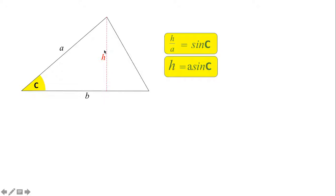Now remember the area of any triangle generally is just a half times the base times the height, so half times b for the base and h for the height. But remember h here we just worked out to be a times sine C.